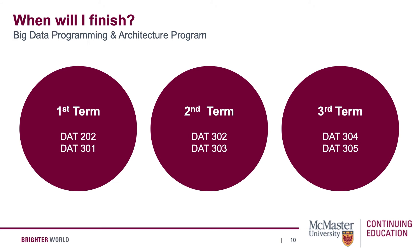For the advanced program, the big data programming and architecture program, here's a suggested schedule of courses. You could complete the program in as quickly as three terms in a virtual classroom format. It's up to you how many courses you take — same amount of time, about seven to nine hours per week per course — and we suggest you complete the program within three years.